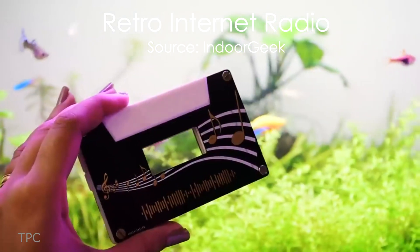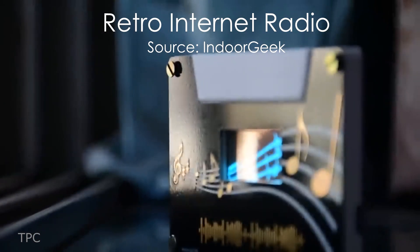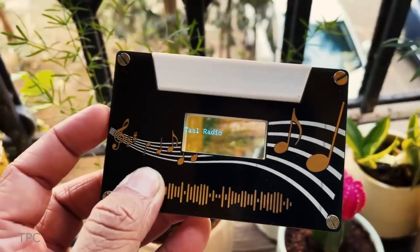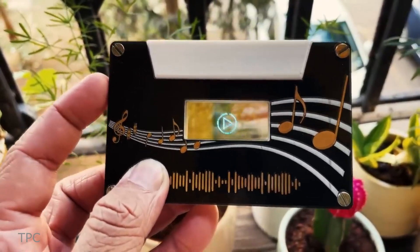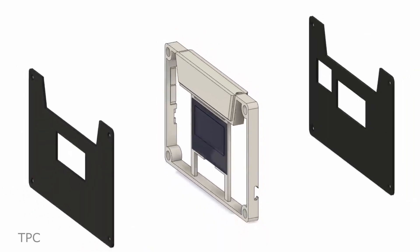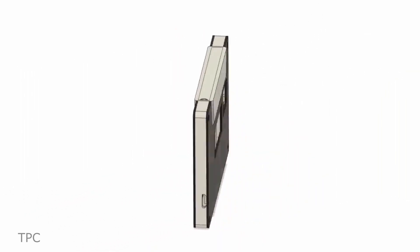Indoor Geek created an internet radio shaped like a cassette to give the project a retro look. He kept a simple design for the project, featuring a 3D printed frame that secures the PCB with four corner screws.